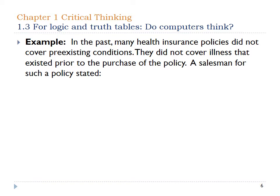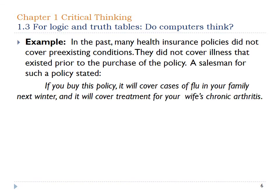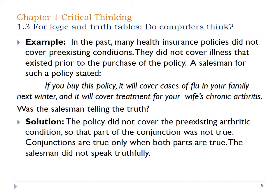In the past, many health insurance policies did not cover pre-existing conditions — an illness that existed prior to the purchase of the policy. A salesman's policy is stated as: if you buy this policy, it will cover cases of the flu in your family next winter, and it'll cover treatment for your wife's chronic arthritis. The question is, was he telling the truth? The policy did not cover the pre-existing arthritic conditions, so that part of the conjunction was not true. Therefore, since it's a conjunction, both parts have to be true for the final statement to be true — the salesman did tell a lie.